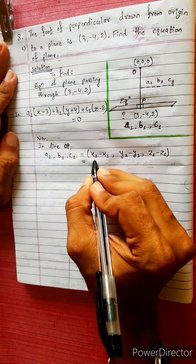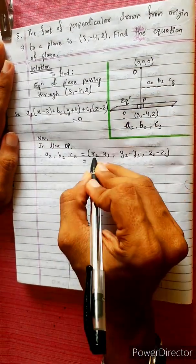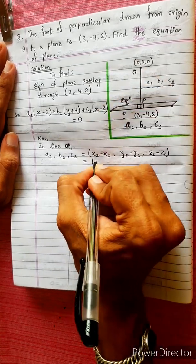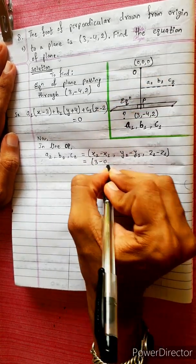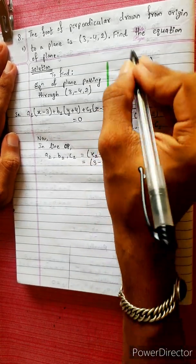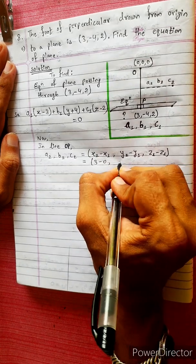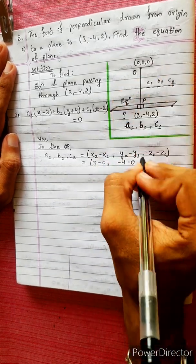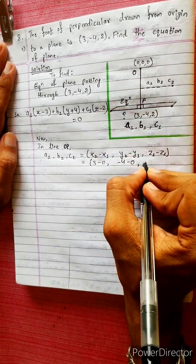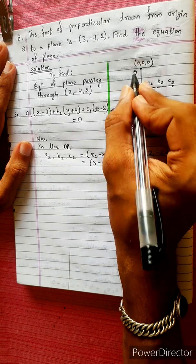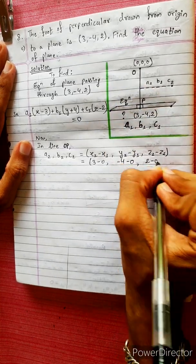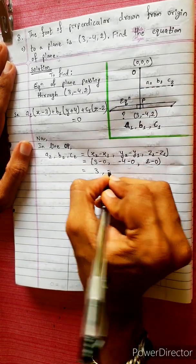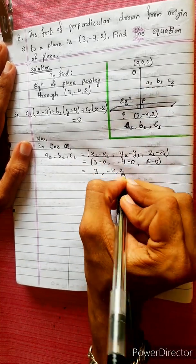We have to write this formula: x2 minus x1, y2 minus y1, z2 minus z1. So for line OP, that gives us: 3 minus 0, minus 4 minus 0, 2 minus 0. Therefore A2, B2, C2 equals to 3, minus 4, 2.